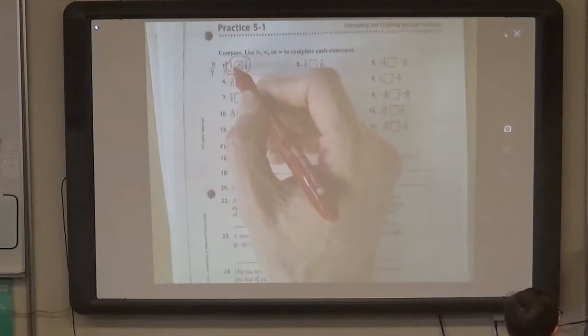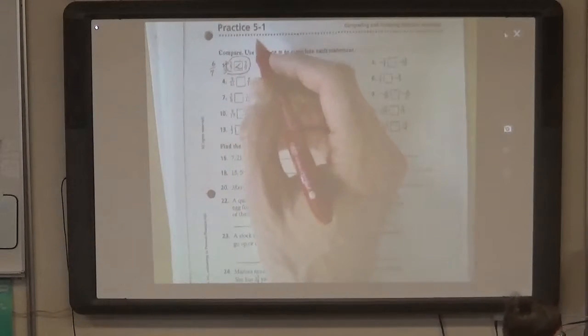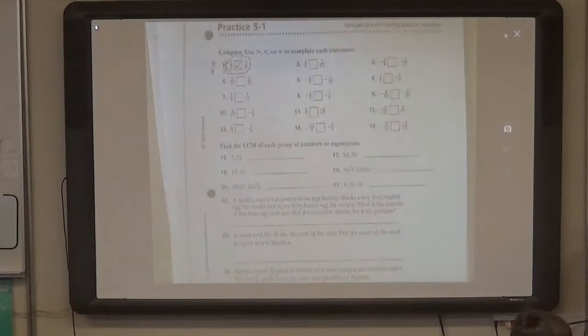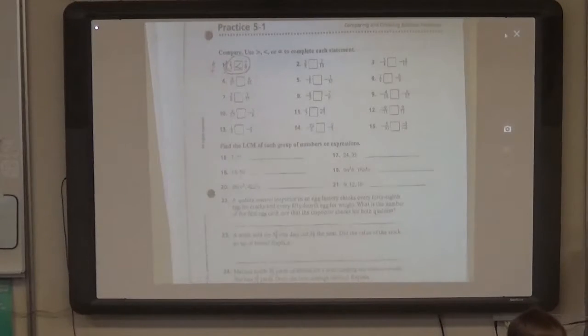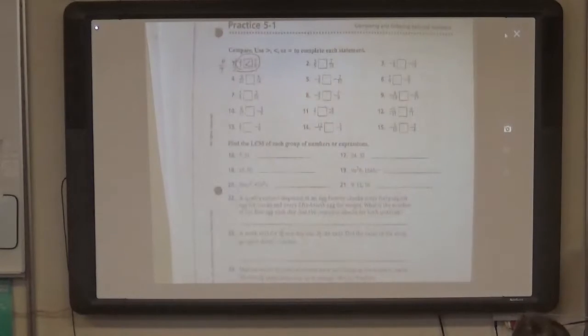And so, on your quiz on Friday, just a reminder, you have to write this with the original numbers. You can convert these to fractions with the same denominators. You can convert them to decimals to compare them. You can use whatever method you want to. Remember that the more negative something is, the farther it is to the left, and that means it's less.